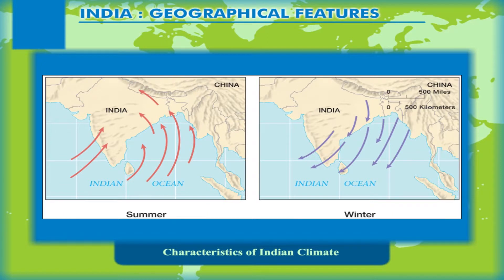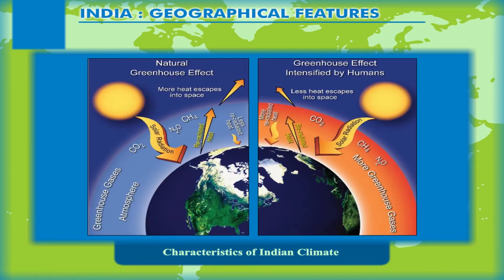Characteristics of Indian Climate. The climate of India is dominated by the monsoon winds, and hence the climate is said to be of the monsoon or tropical monsoon type.